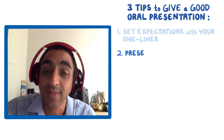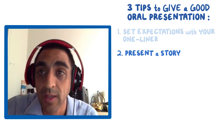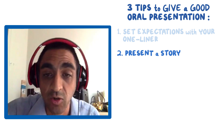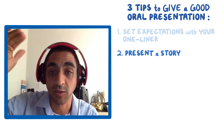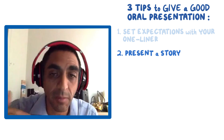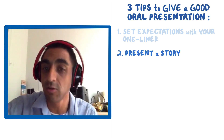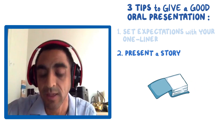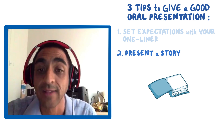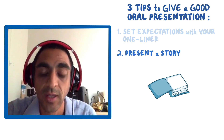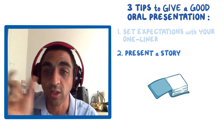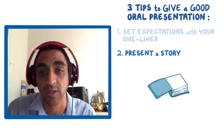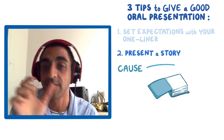Tip number two: present a story. The first tip was set expectations with your one-liner. But if someone says tell me the full story, you want to make sure you tell it as a story — meaning use chronology, use time order, and make sure it flows naturally, with cause and then effect.